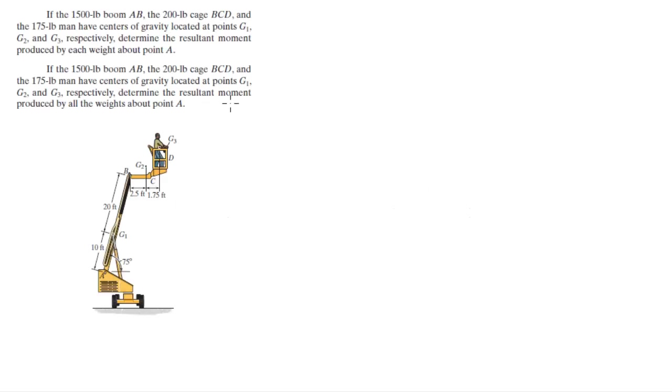All right guys, I'm going to do these two problems. In the first, the 1500 pound boom AB, the 200 pound cage BCD, and the 175 pound man have centers of gravity at G1, G2, and G3 respectively. Find the resultant moment produced by each weight about A.